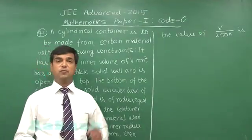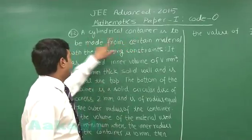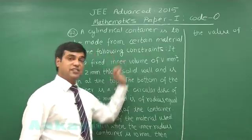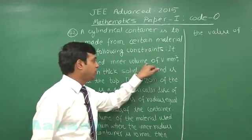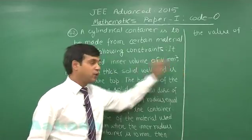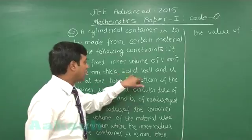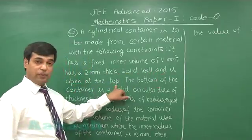Let us go for question number 42. A cylindrical container is to be made from certain material with the following constraints. It has a fixed inner volume of V millimeter cube, has a 2 millimeter thick solid wall and is open at the top.